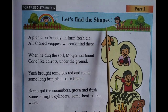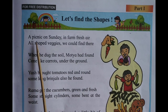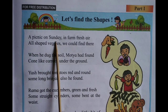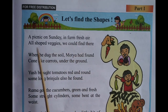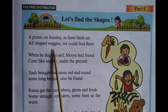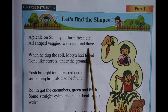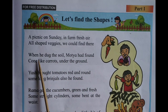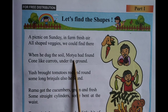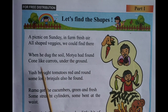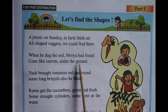Let's find the shapes. A picnic on Sunday, in firm fresh air, all shaped wedges we could find there. When he dug the soil, Motiya had found cone-like carrots under the ground.